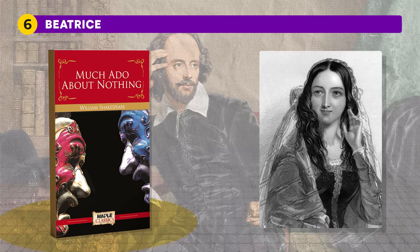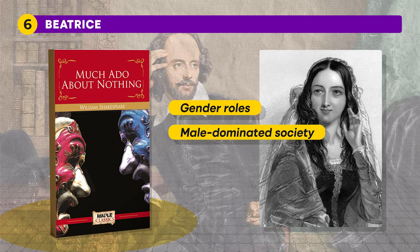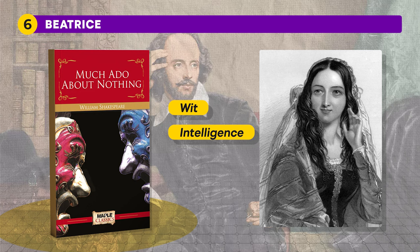Next is Beatrice, a quick-witted character in Shakespeare's comedy Much Ado About Nothing. She is known for her sharp tongue, intelligence, and independence. Beatrice engages in a battle of wits with Benedick, a soldier and bachelor, throughout the play. Despite the constant banter, there is a strong underlying attraction between them. Beatrice's character challenges traditional gender roles of the time, as she is outspoken and unafraid to assert herself in a male-dominated society. Her wit and intelligence make her one of Shakespeare's most memorable and beloved heroines.